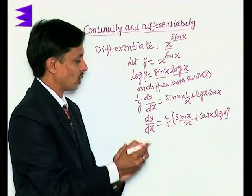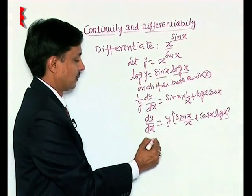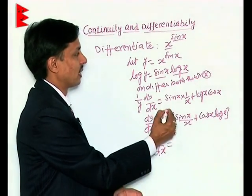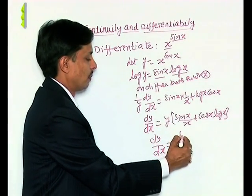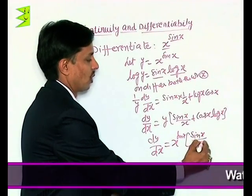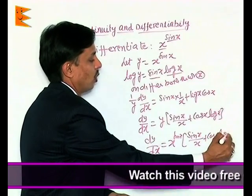But we know that the value of y for us is x to the power sin x. Hence the derivative of that is dy by dx equals x to the power sin x times sin x upon x plus cos x into log x.